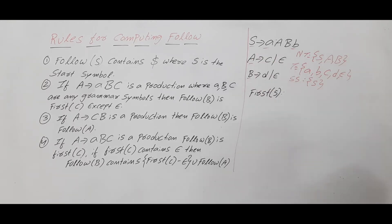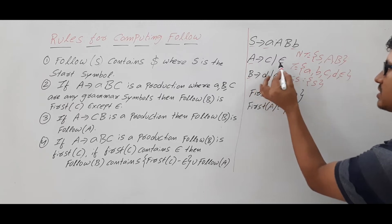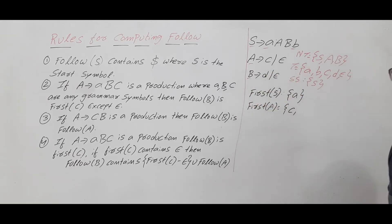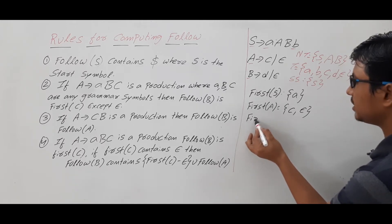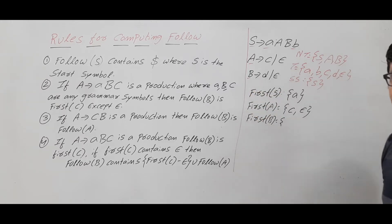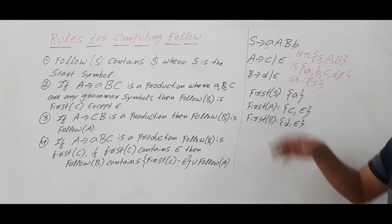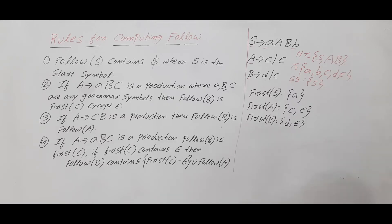FIRST of S is FIRST of A. FIRST of A — where A is a terminal — you will get A only. FIRST of A also equals FIRST of C, which is a terminal, so you get C. Since FIRST of A consists of epsilon, you will have epsilon too. FIRST of B equals FIRST of D — D is a terminal so you get D — and even epsilon. So I have computed the FIRST of all the non-terminals for this grammar.